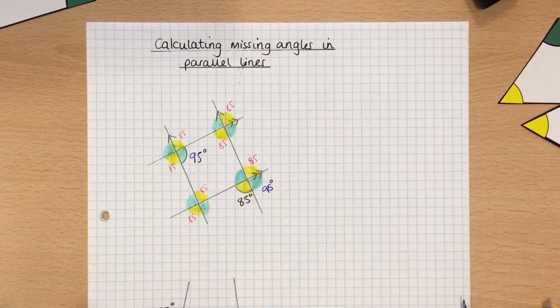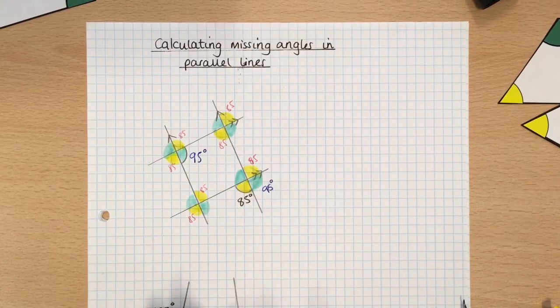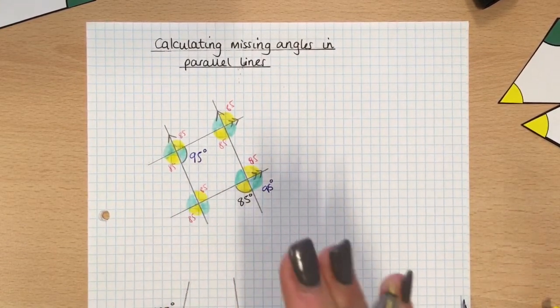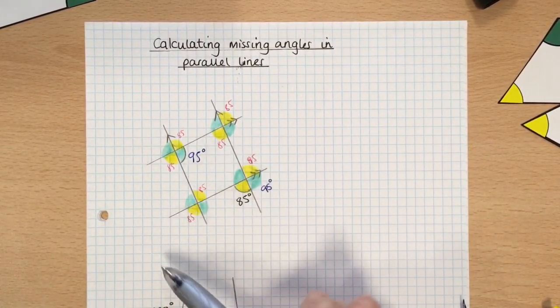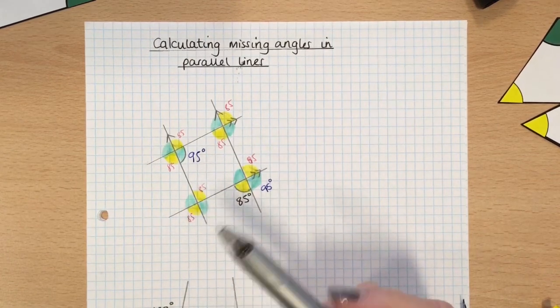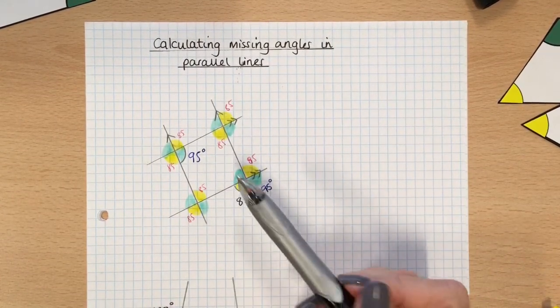And the same with all the 95s. So the idea is, use your colours and try and figure out as many of the angles as you can, and you always end up finding the one that you want.